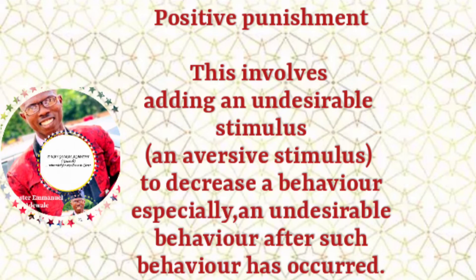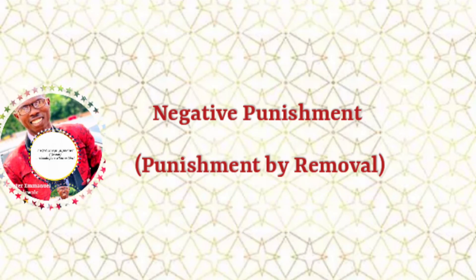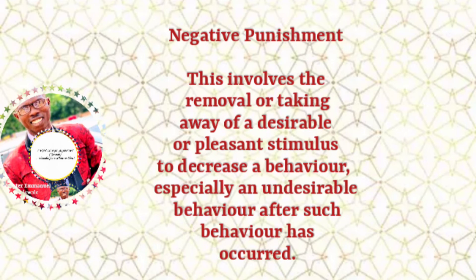For positive punishment, you are adding something that is not good in order to decrease a behavior. But for negative punishment, you are removing something that is good to that person to decrease a behavior. Negative punishment involves the removal or taking away of a desirable or pleasant stimulus to decrease a behavior, especially an undesirable behavior, after such behavior has occurred.